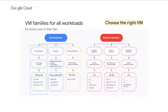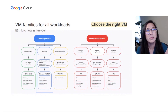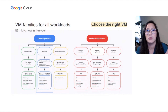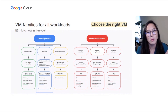E2 VMs can provide cost efficiency with similar baseline performance as N1s. Those running N1 standard 1 can consider using E2 medium to unlock some cost savings. Customers who require GPUs may want to consider N1s. Compared to N1s, N2s offer more than 20% price performance improvement for many workloads and support up to 25% more memory per CPU. So for workloads that don't require GPUs, we recommend N2s.